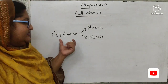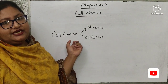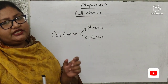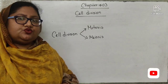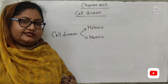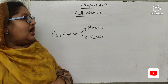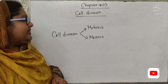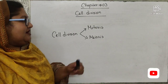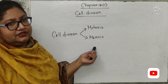Cell division: the process through which a mother cell divides to produce two or more cells is known as cell division. Cell division is mainly of two types — mitosis and meiosis.